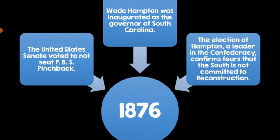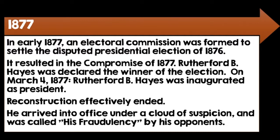In early 1877, an electoral commission was formed to settle the disputed presidential election of 1876, resulting in the Compromise of 1877. Because Rutherford B. Hayes was declared the winner of the election, federal troops would be withdrawn from the South, and Reconstruction was effectively over. On March 4, 1877, Rutherford B. Hayes became president, arriving in office under a cloud of suspicion and called 'His Fraudulency' by his opponents.